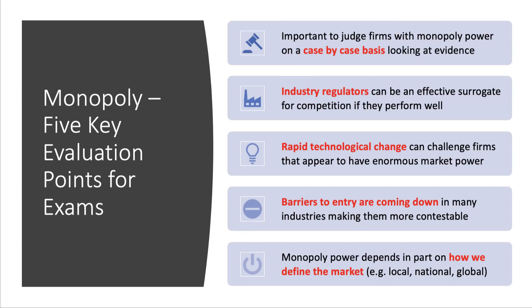Let me finish with five key evaluation points for a question on monopoly power. First, judge businesses that have monopoly power on a case-by-case basis — don't assume automatically that monopoly power is bad and that government intervention is needed. Judge it on the basis of what firms actually do, not what the textbook says they might do, and look at the evidence, particularly in data response questions. Second, regulators have a key role and can be an effective surrogate for competition where little actual competition exists.